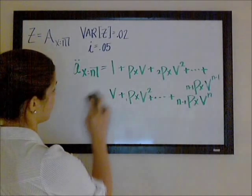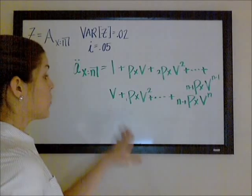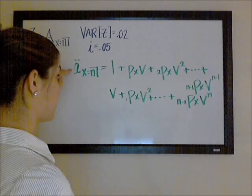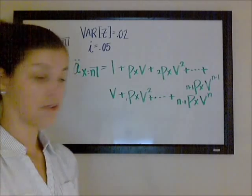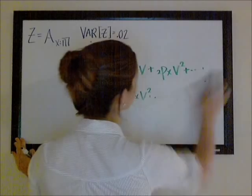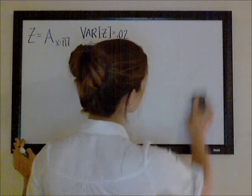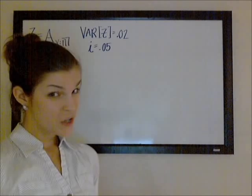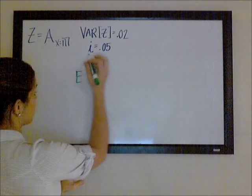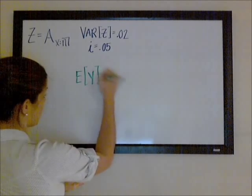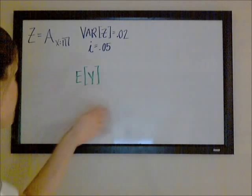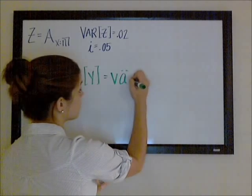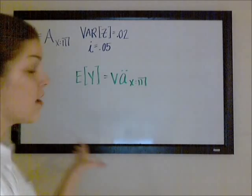So, what we have is an end year temporary annuity due on X, except that everything is multiplied by an extra V. So, the actuarial present value of our annuity, or in other words, the expected value of Y, which is the random variable representing the true present value of that annuity, is going to be V times an end year temporary annuity due on X.